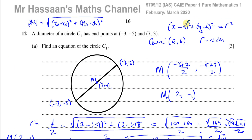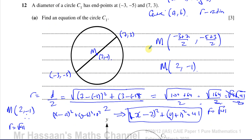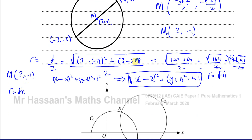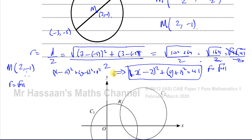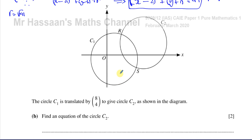It's important to understand how to use the equation of a circle — it's made up of the center coordinates a and b and the radius r. Because they gave us a diameter, we could work out the center and the radius from that. Now for part B: the circle C1 is translated by the vector 8, 4 to give circle C2. The original center was at 2, negative 1.